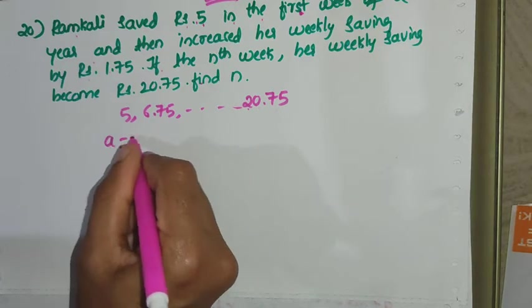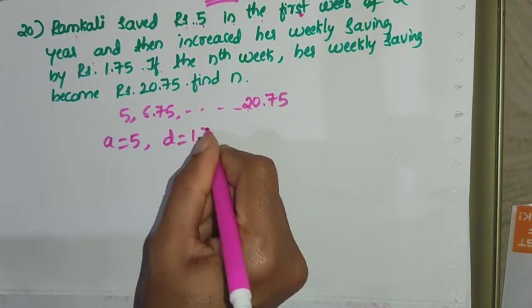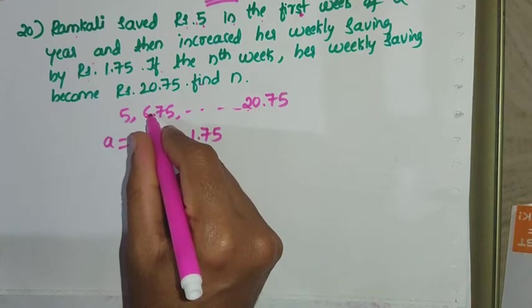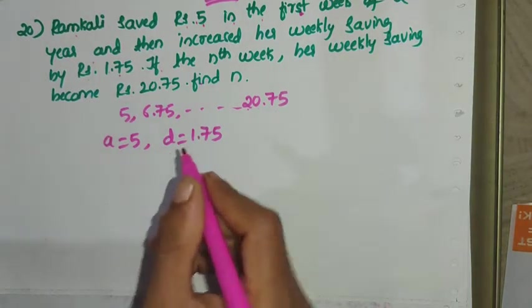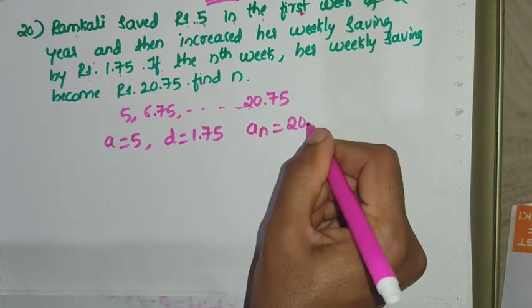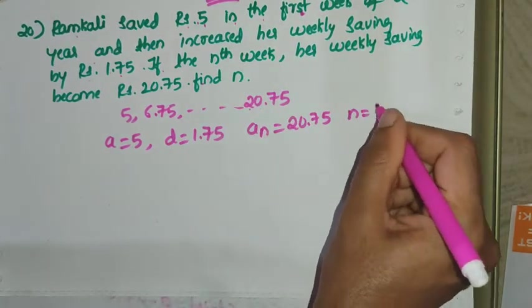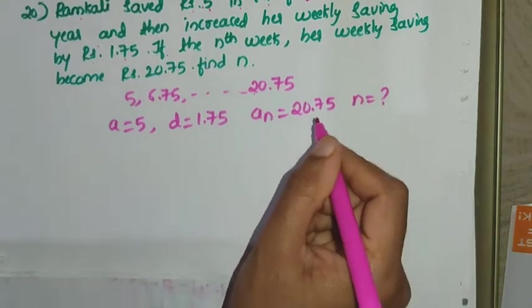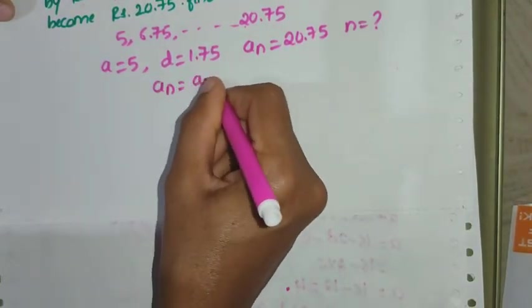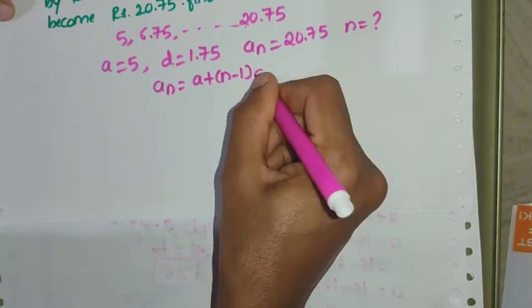Here A is 5, and D is 1.75 because every week she increases her saving by Rs. 1.75. And a_n is 20.75. We need to find N. Using the formula: a_n = a + (n-1) × d.